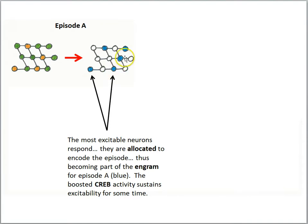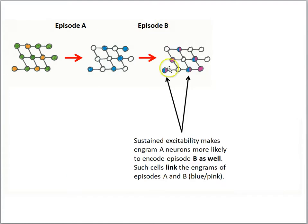Because these cells were recently activated by episode A, the boosted CREB activity sustains excitability for some time. Not only are these cells now becoming engram A cells, they retain some of their elevated excitability, which makes them more likely to be allocated to the next memory engram. Along comes episode B — sustained excitability makes engram A neurons more likely to encode episode B as well. These cells are thus linking the engrams of episodes A and B.